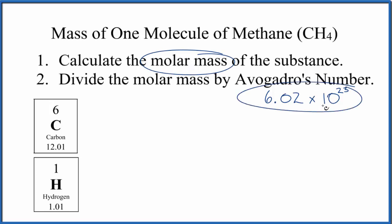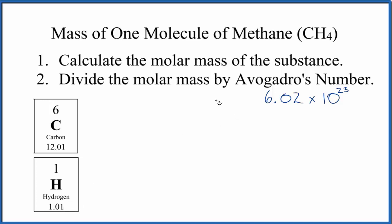So let's first find the molar mass. For methane, carbon is 12.01 and hydrogen is 1.01. We have one carbon and four hydrogens, so it's 12.01 plus 1.01 times 4. The molar mass for methane is 16.05 grams per mole.